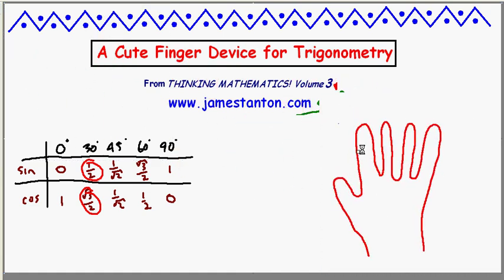Let's do sine and cosine of 45 degrees. So here's the 45 degree finger, the middle one. Let's have the 45 finger point downwards.